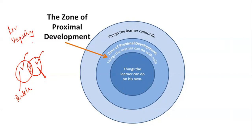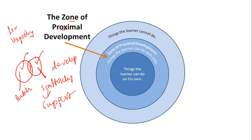The peer group helps make things clear — what is not known by the individual. They try to create this zone of development by giving some amount of scaffolding, which we have learned in Teaching Aptitude. Scaffolding means nothing but a support, and this support stays until the individual learner learns. The moment he learns and develops well, the support is taken out. So the Zone of Proximal Development represents things a learner can do on his own, and things he cannot do alone but can achieve with the help of peer groups or educators.